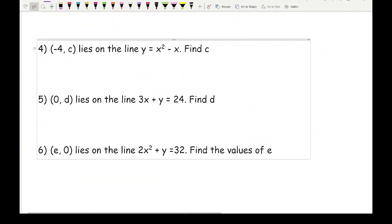Moving on to our last three examples. Here we've got (-4, c) lies on the line y equals x squared minus x. For this, I've got x equals minus 4 and y equals c. If I substitute all of that into this equation, instead of writing y, I'm going to write c. It equals minus 4 squared minus minus 4.